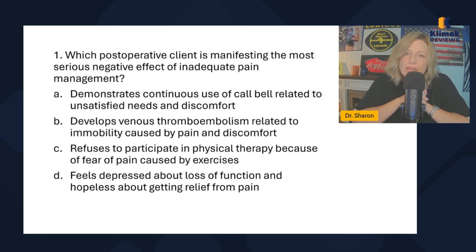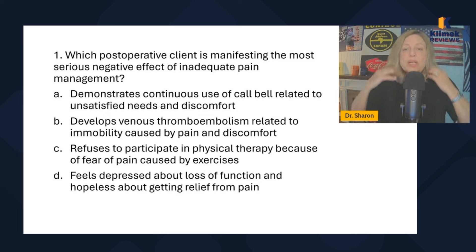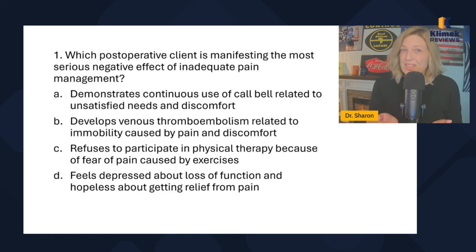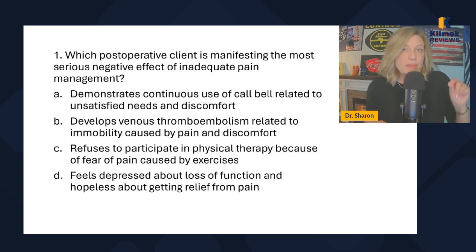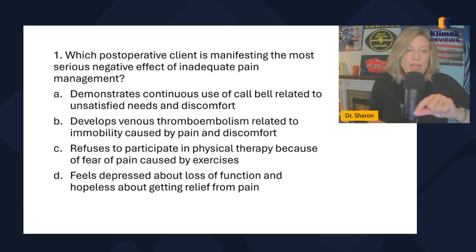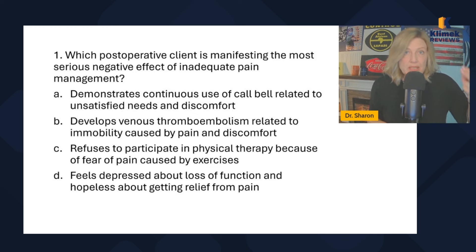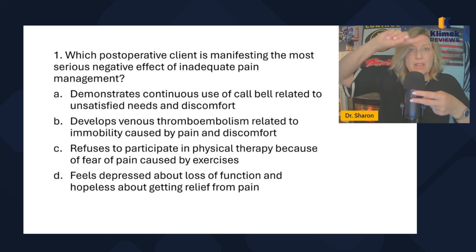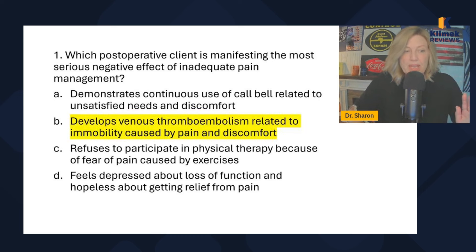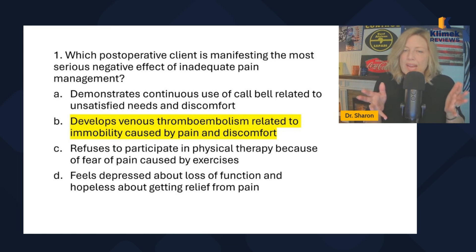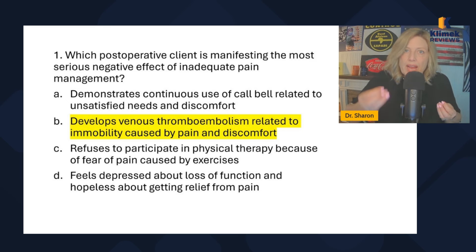Now we have to pick the higher priority between two unexpected findings. I'm going to go to Maslow because Maslow is used with multidimensional problems. Option B is a physiological problem — VTE is an objective finding. Option D is depression, which is psych, and hopelessness, which is spiritual — those are ranked fourth and sixth in Maslow. Physiological is number one. So I'm picking B.